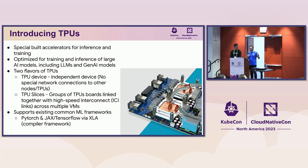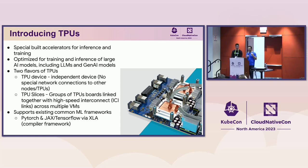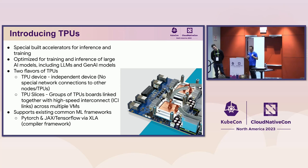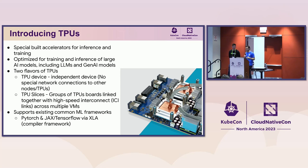Now let's look at TPUs. TPUs are special-built accelerators for inference and training by Google, optimized for large AI models like LLMs and generative AI models. There are two flavors: TPU devices, which are independent standalone devices similar to a GPU, and TPU slices, which are groups of TPUs spread across multiple machines interconnected with a high-speed interconnect. Existing ML frameworks like PyTorch, JAX, and TensorFlow can be used to write workloads against them.